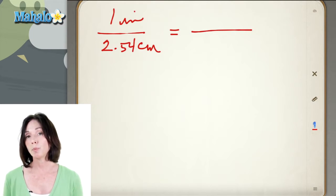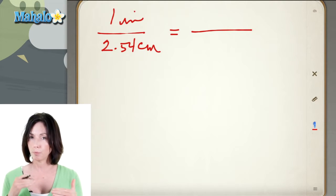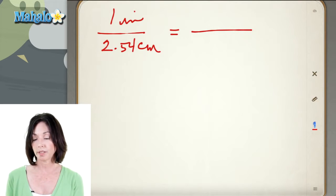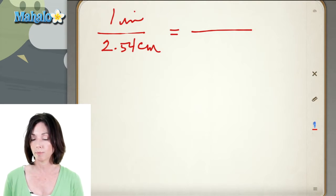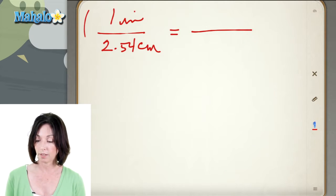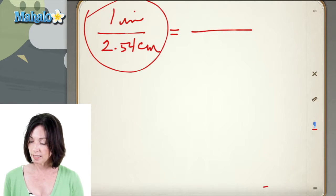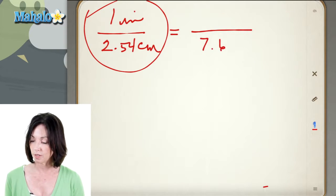Now whenever you do a proportion problem you have to make sure that you put things in the right order. So inches have to be on the top and centimeters have to be on the bottom because that's how I wrote my conversion factor here. So let's say I have 7.62 centimeters and I want to find out how many inches that is. So I have x inches on the top.